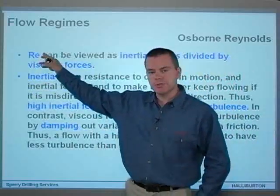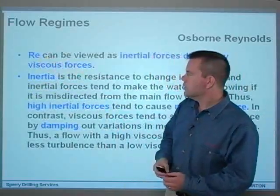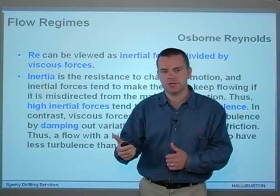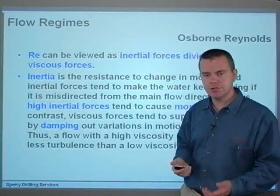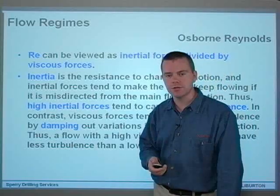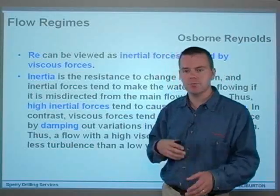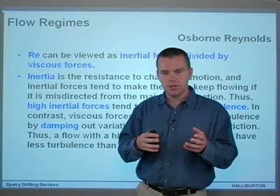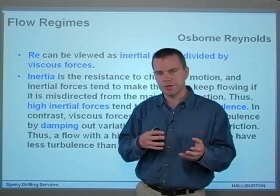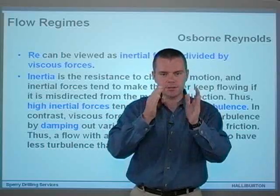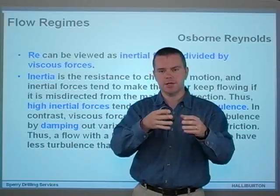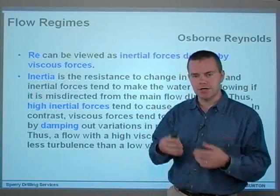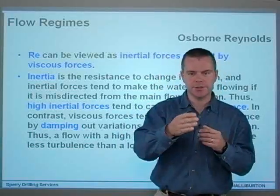RE is the normal notation for the Reynolds number, and it can basically be viewed as inertial forces divided by viscous forces. Inertia being the resistance to change in motion — inertial forces tend to make the water keep flowing if it's misdirected from the main flow direction, trying to keep it flowing in the direction and at the rate it's traveling. So inertia is what's trying to keep it in that direction.